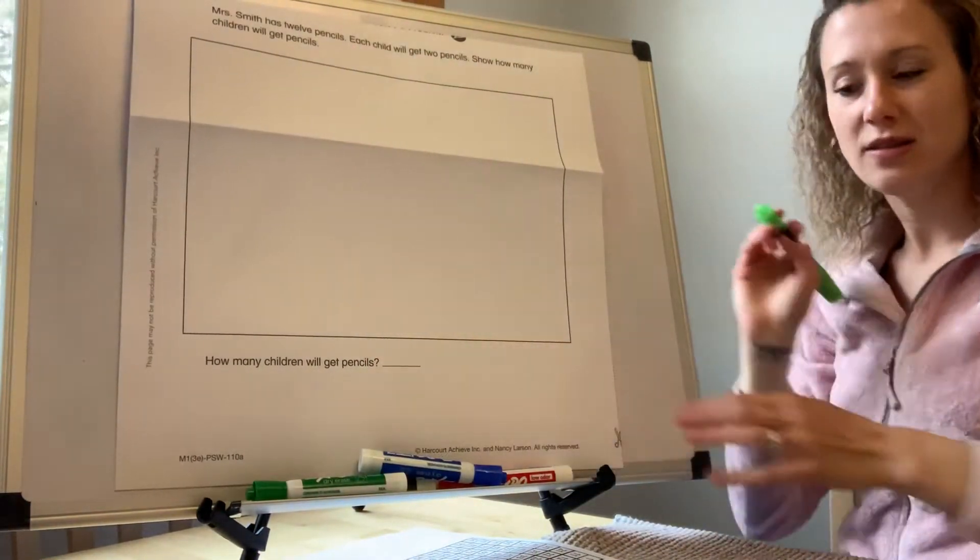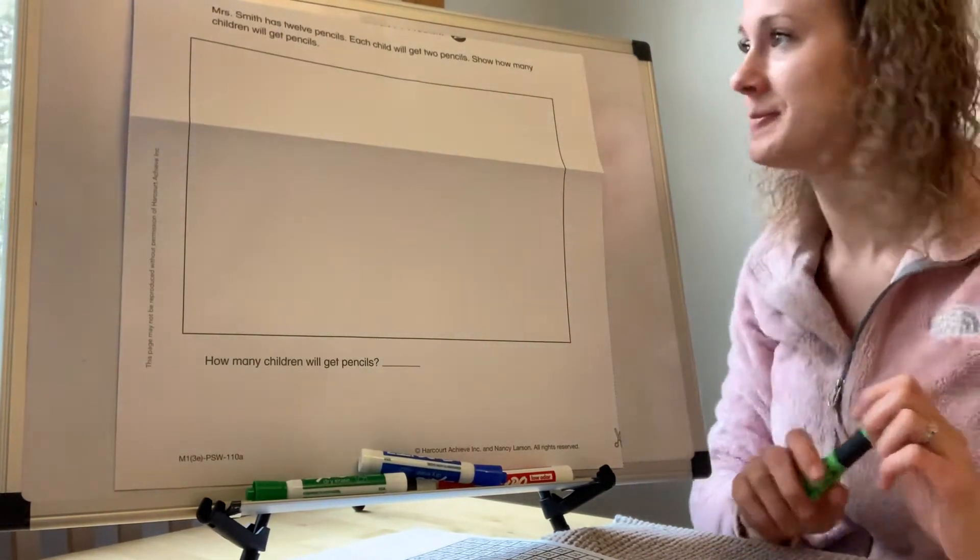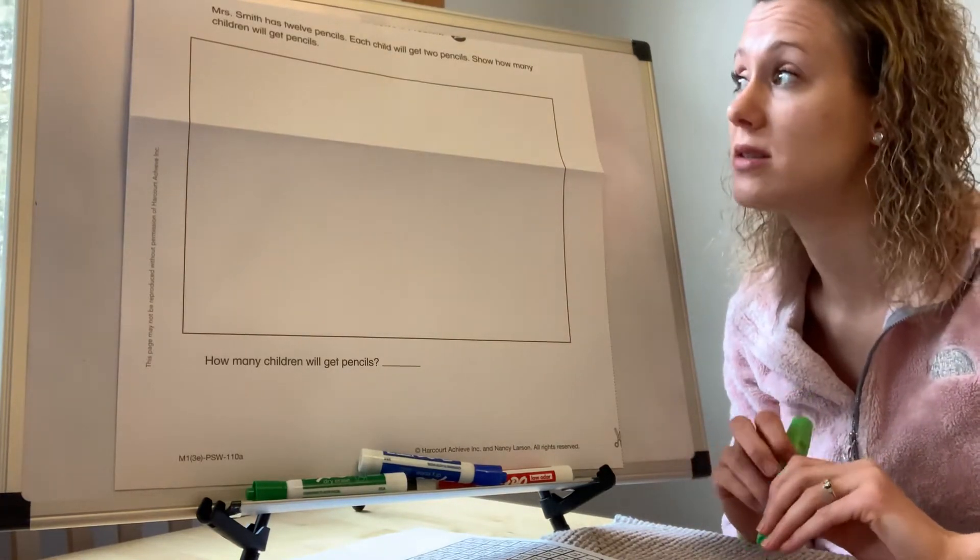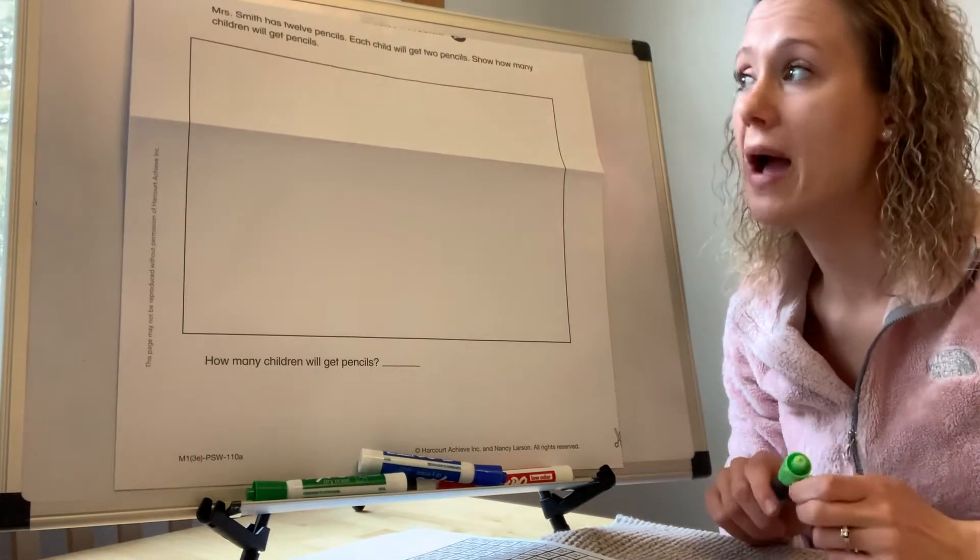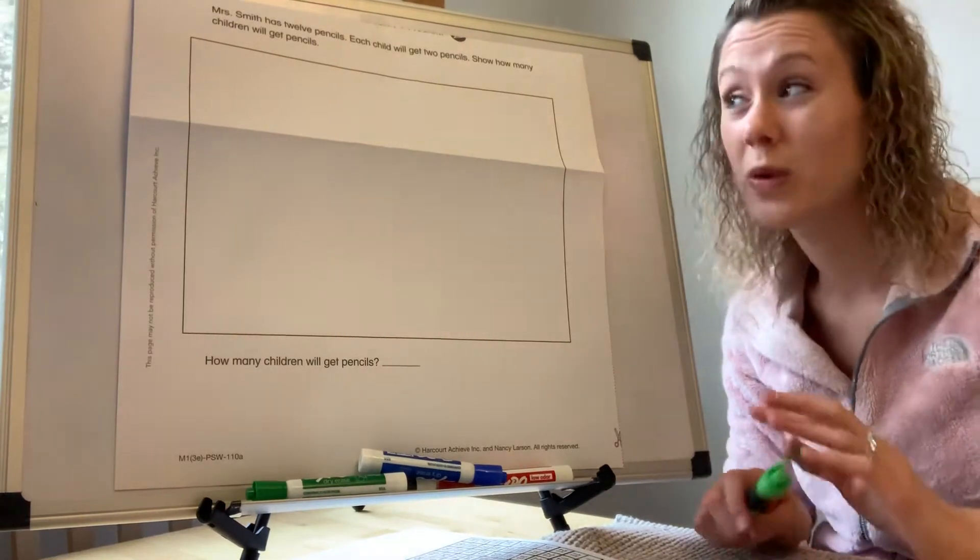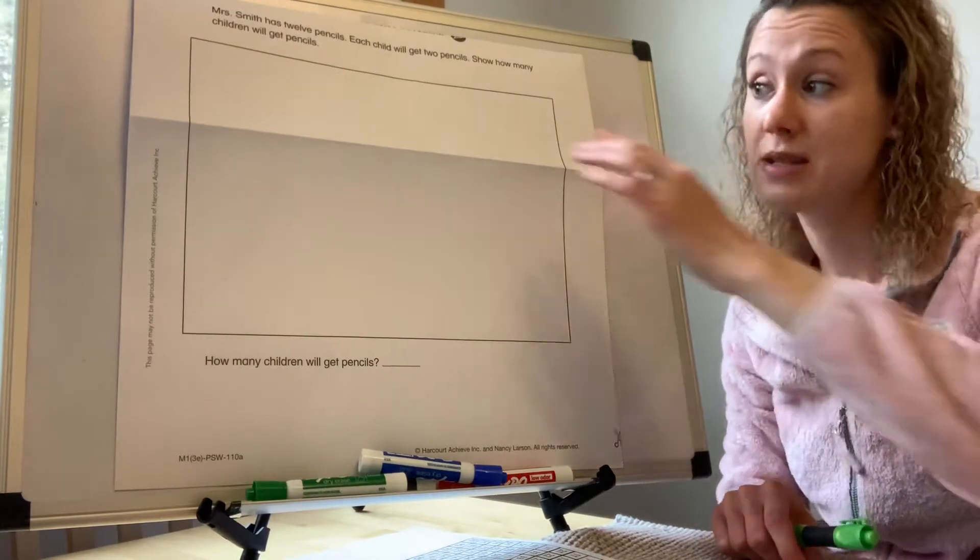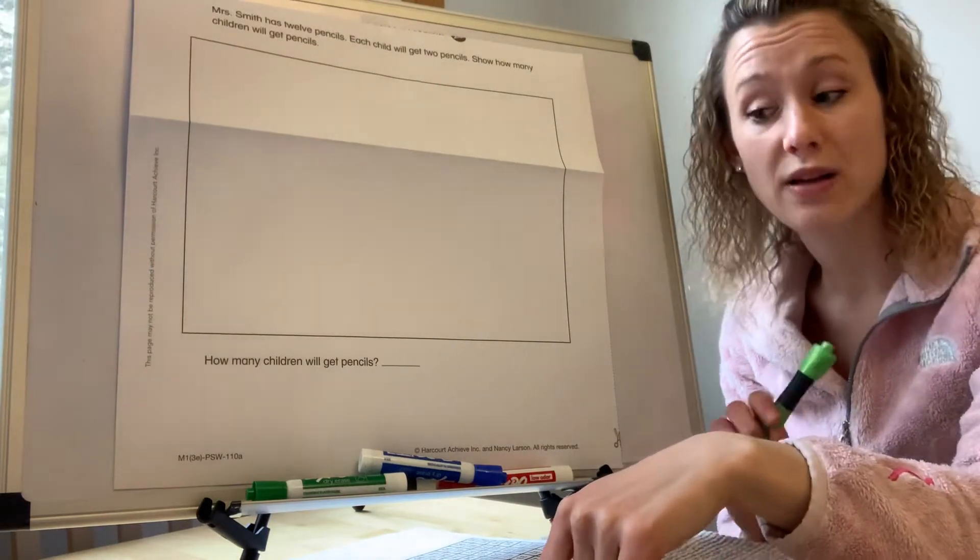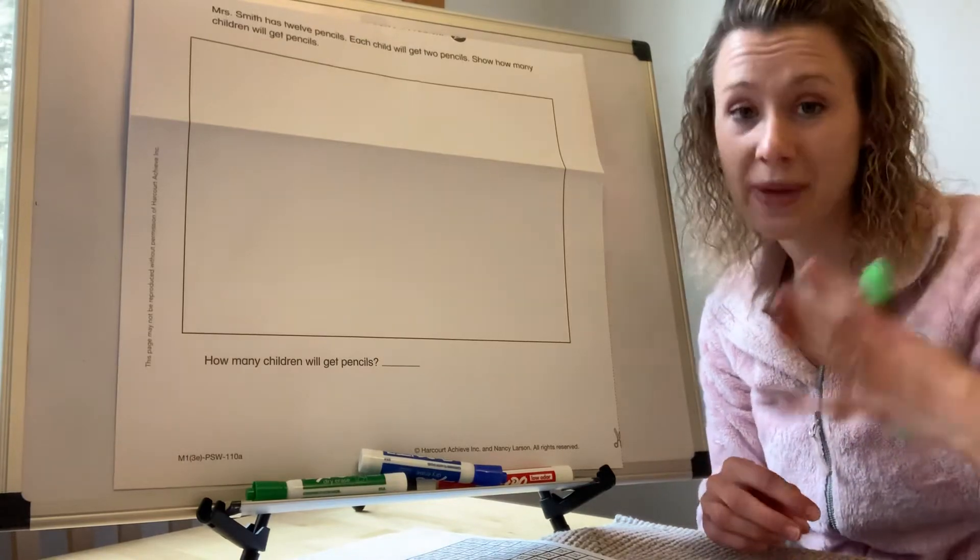Alright, so you should have your pencil. I'm going to use a marker so you can see. It says Mrs. Smith has 12 pencils. Each child will get two pencils. Show how many children will get pencils. Okay, so when we do a word problem like this, remember we have to start with the first thing that they told us. And we need to make sure that we do that in our workspace. So it says Mrs. Smith has 12 pencils. So the first thing we need to do is draw 12 pencils.